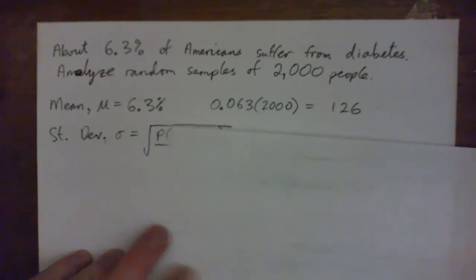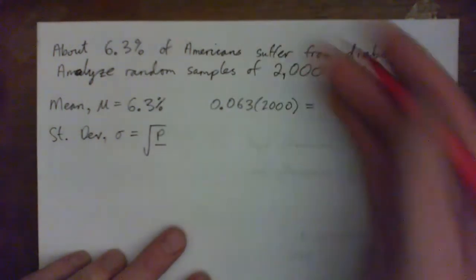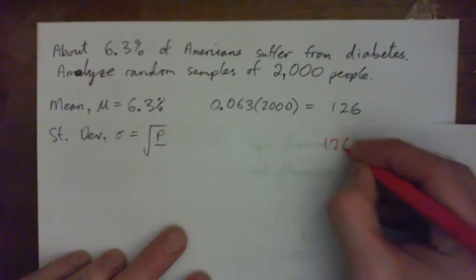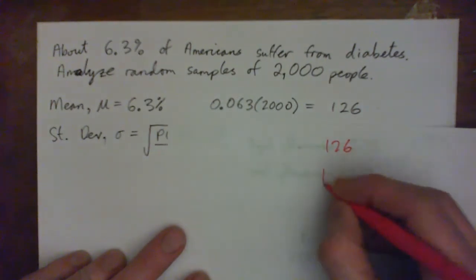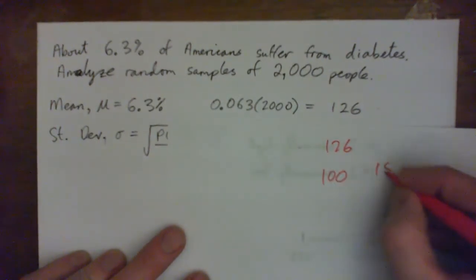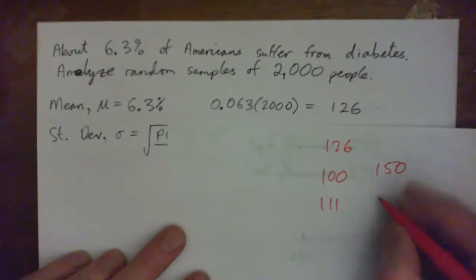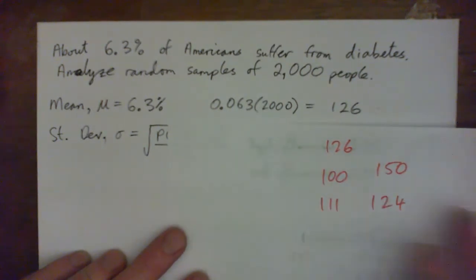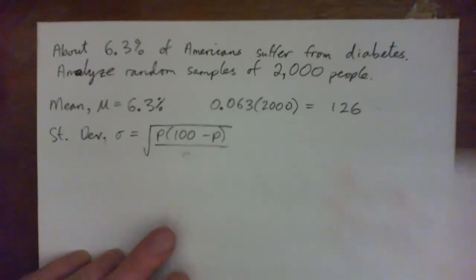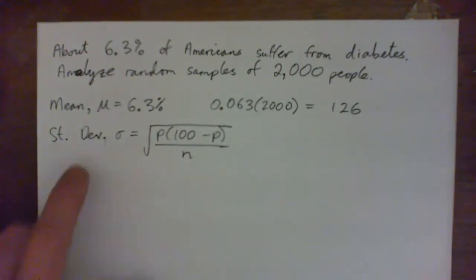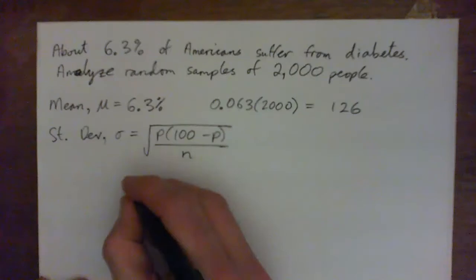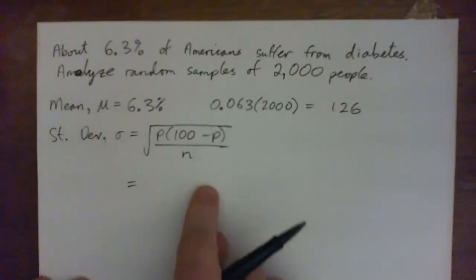But the only question now is, okay, so you can't expect that every time you pick 2,000 people, exactly 126 of them are going to have diabetes. It could be 100 of them, or it could be 150, or it could be 111, or it could be 124. But what we want to know is what's unusual? What's unusually high or unusually low? So that's what we're doing here. That's why we need the standard deviation to tell us what's a big deal and what's not a big deal. What's unusually high and unusually low? So press pause and calculate this formula if you haven't done so yet.